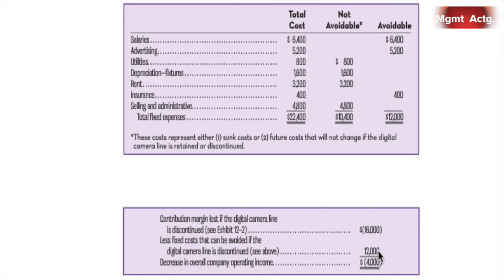The line looks like it's losing $6,400. But if we get rid of it, there are certain costs we can't get rid of, and we'll lose another $4,000 above that. We have at least $16,000 in contribution margin covering some of the avoidable costs, with another $4,000 going towards the non-avoidable expenses. This is a long way around — had we just presented the information as learned in chapter 12, looking at costs as traceable and common, let's see what we would have gotten.